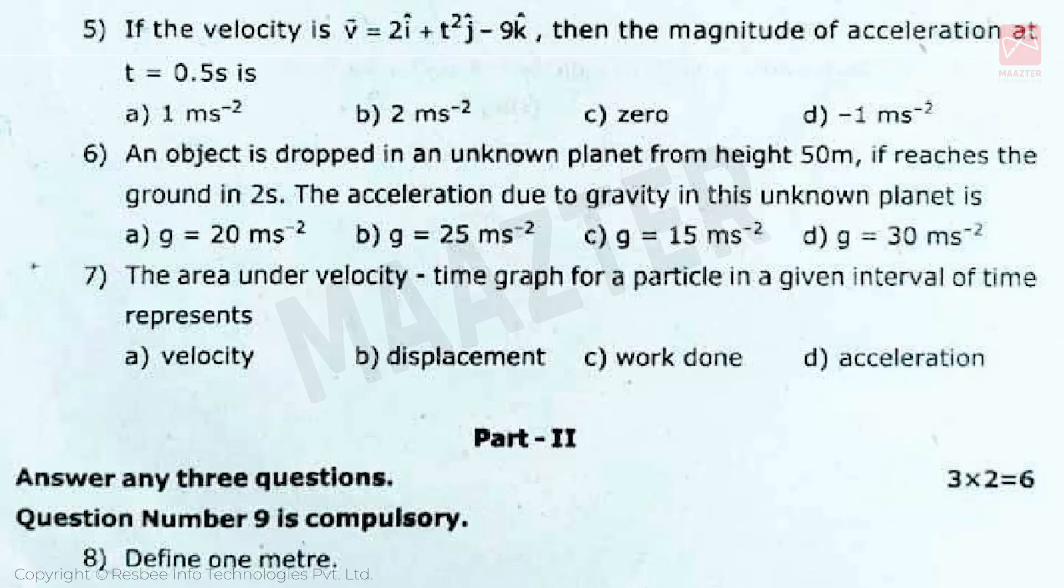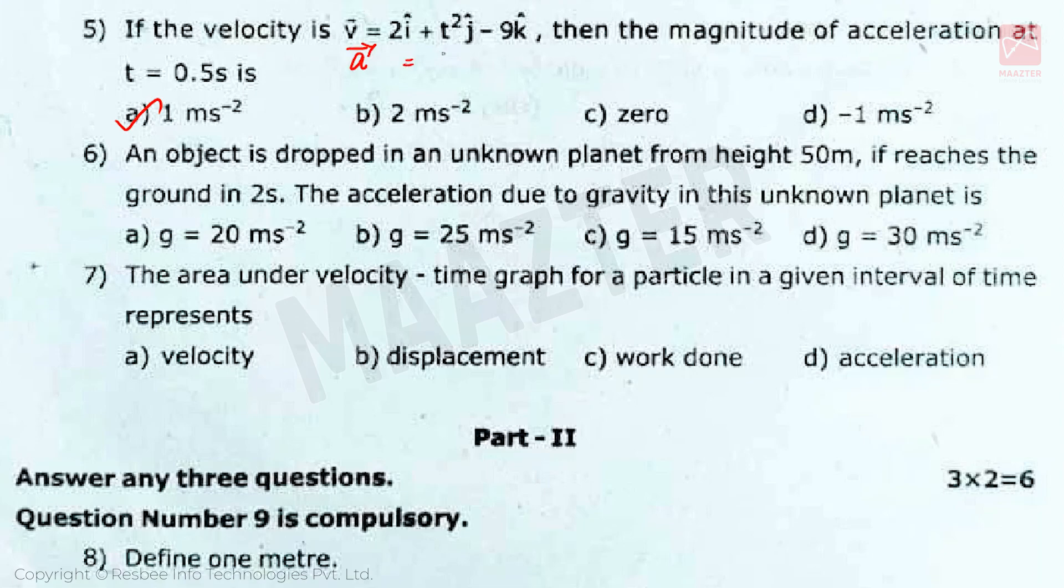Fifth question is: If the velocity v vector is equal to 2i cap plus t² j cap minus 9k cap, then the magnitude of acceleration at t is equal to 0.5 second is. Answer is 1 ms⁻². For this question we use the formula a vector is equal to dv vector by dt. Using this formula, we get the correct answer.